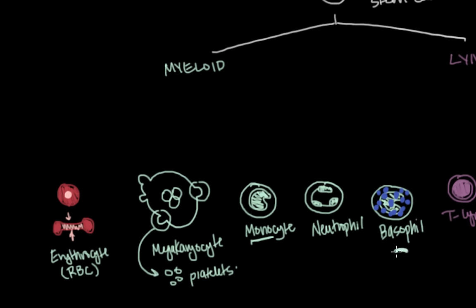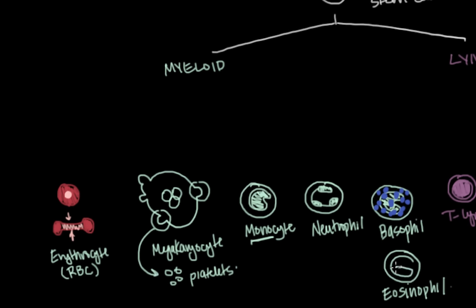So the last type of myeloid cell that we talk about is an eosinophil. It has a nucleus that can sometimes be found in two pieces. But that's not what makes it so unique. What it's really well known for is the fact that it has these bright, beautiful red granules in its cell cytoplasm.